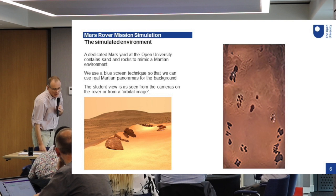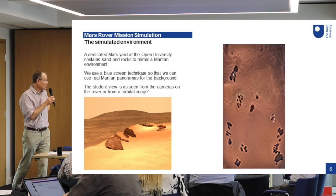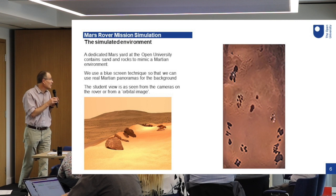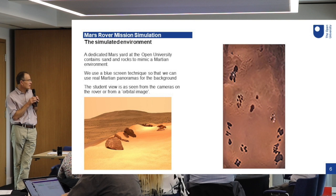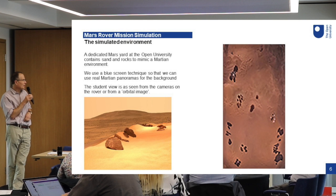The environment we have is a dedicated Mars yard that we built at the Open University. It's been built to emulate a real Martian environment — there are sand and rocks in there, with rocks that are analogues of the kind you would find on Mars. One of the things we do for running this with students is that we've got a blue screen around the inside of the yard so that we can back-project a real Martian panorama onto the background. It gives the students a real feeling that the rover is in a real Martian environment.